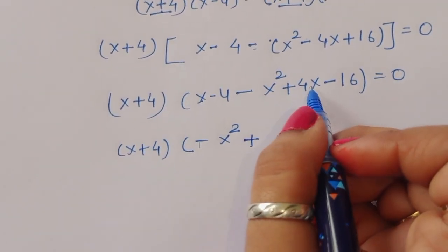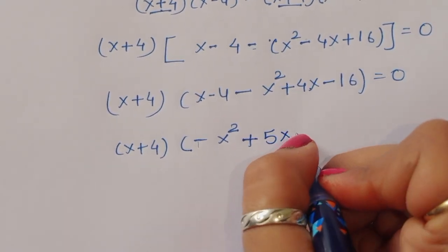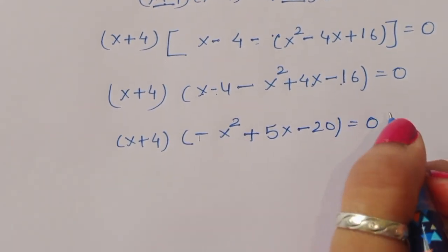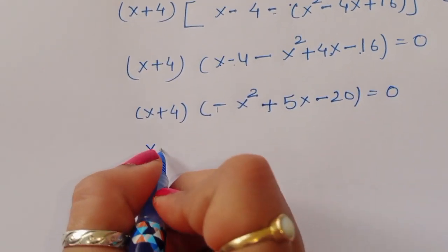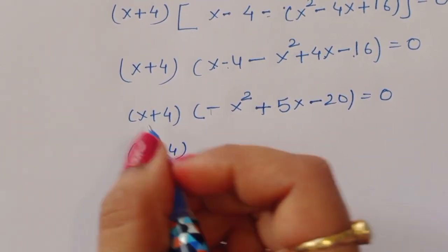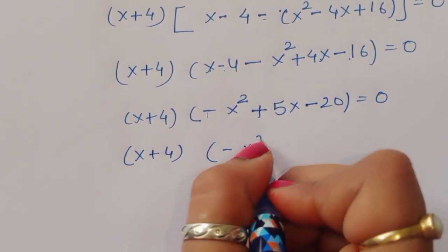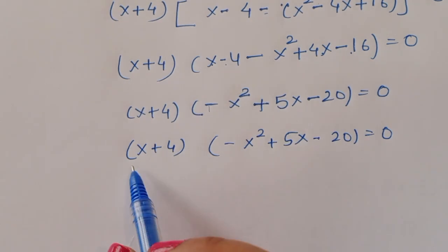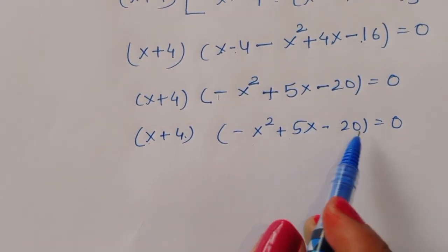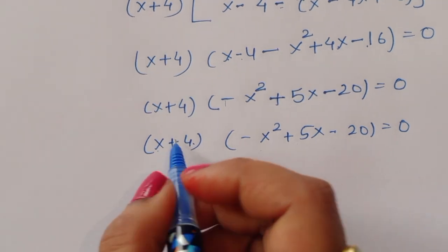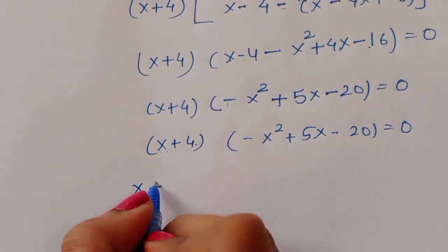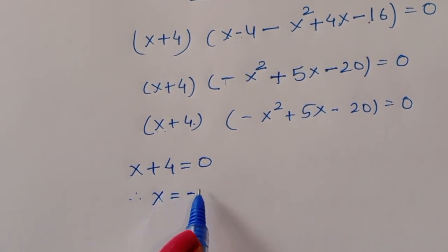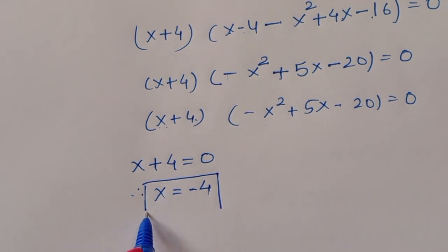Taking (x plus 4) as a common factor: (x plus 4) times [(x minus 4) minus (x squared minus 4x plus 16)] equals 0. Simplifying inside the bracket gives (x plus 4)(negative x squared plus 5x minus 20) equals 0. From the first factor, x plus 4 equals 0, so x equals minus 4.